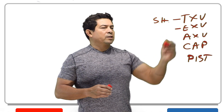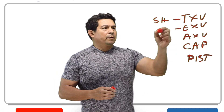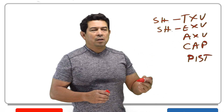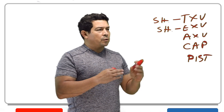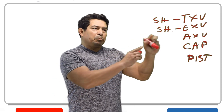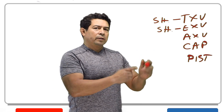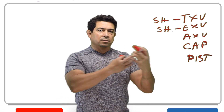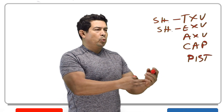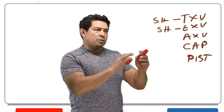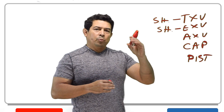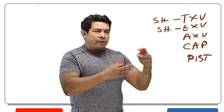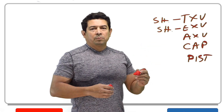The electronic expansion valve does basically the same thing — it maintains constant superheat, opening and closing and adjusting. But it does it all electronically. It has electrical sensors that send signals to a board, the board adjusts and sends a signal to the valve, and it opens and closes the valve electronically. It has a little motor in there — all of that to maintain constant superheat.